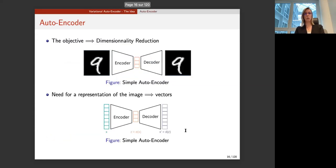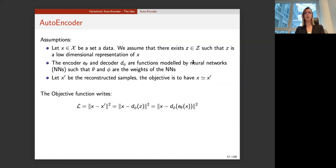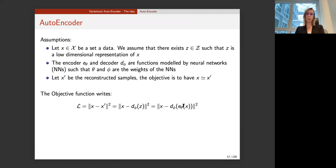What is an autoencoder? You take an image, encode it into a vector, and then this vector decoded should look like the original. The encoder and decoder are neural networks. The assumption is that there exists a latent variable of lower dimension than the input, such that D(E(x)) should look like x. We use a discrepancy like the L2 norm — since we are considering grayscale images, we just use the L2 objective function.